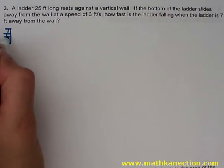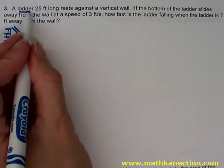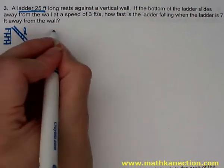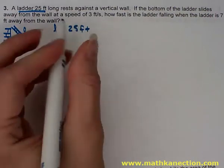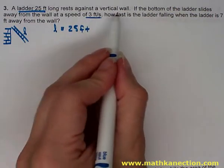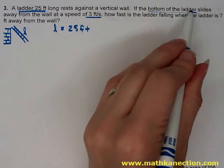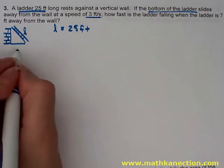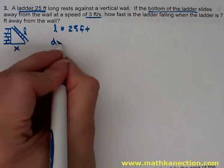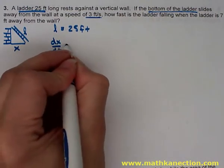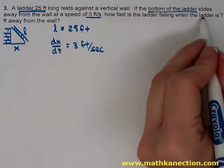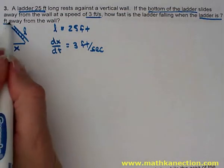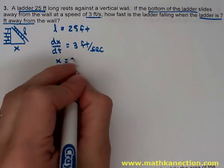For the next problem, we have a ladder leaning against a vertical wall. Drawing a picture of the ladder leaning against the wall and labeling the ladder L, the given information is the ladder equals 25 feet. The ladder is sliding away from the wall at 3 feet per second, so labeling the bottom distance from the wall as x, we have dx/dt equal to 3 feet per second. The ladder is currently 7 feet away from the wall, so x equals 7 feet.